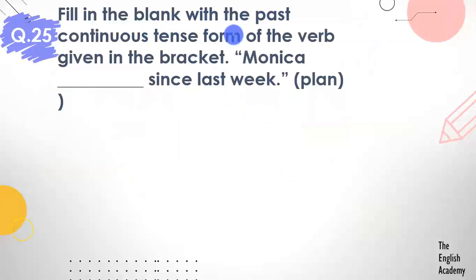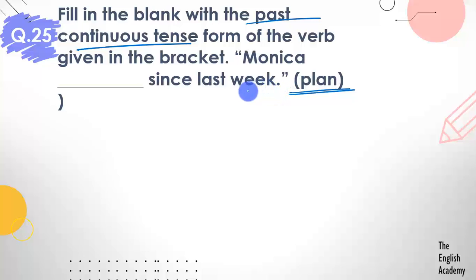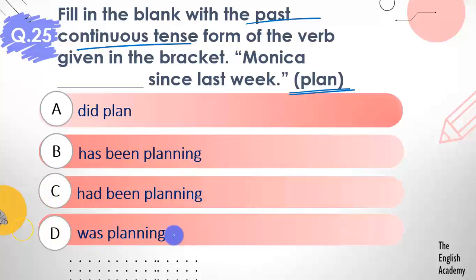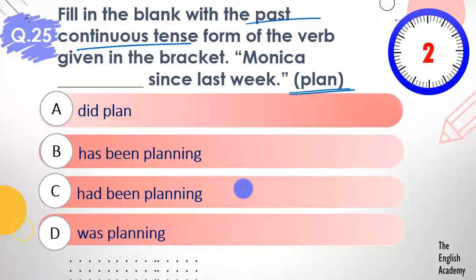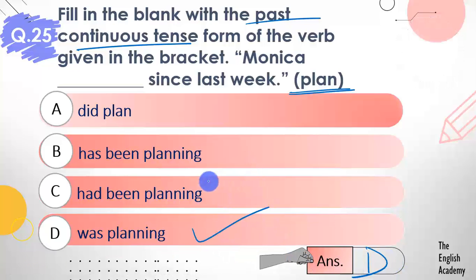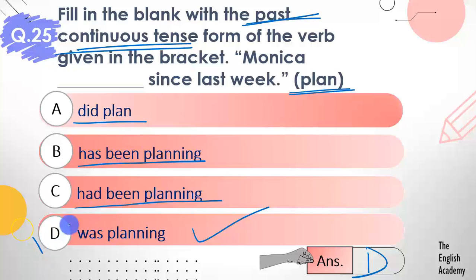Question number 25: Fill in the blank with the past continuous tense form of the verb given in brackets — 'plan'. Monika ___ since last week. Options: A) did plan, B) has been planning, C) had been planning, D) was planning. The answer is option D — was planning. 'Had been planning' is past perfect continuous, 'has been planning' is present perfect continuous, 'did plan' is past tense. We need past continuous tense, which is option D — was planning. Monika was planning since last week.